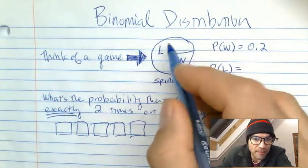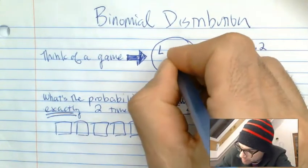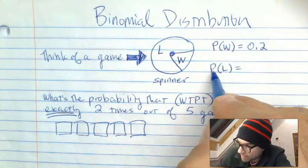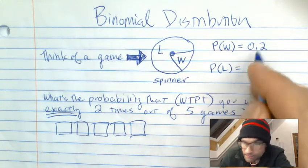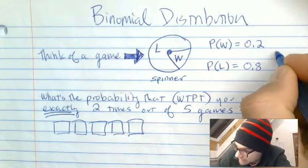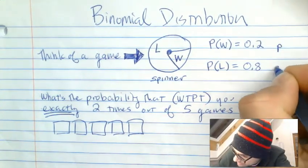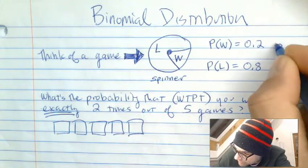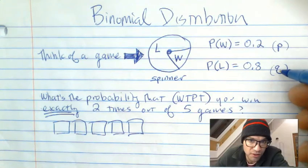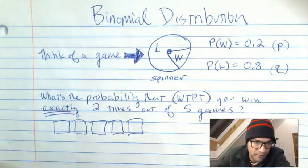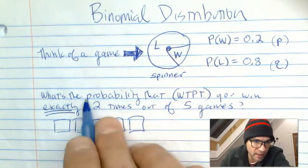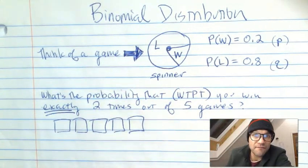Consider a game. Imagine this is a spinner. We spin it and the probability of winning is 0.2, therefore the probability of losing would be 0.8. In stats, you'll see this written as P and Q — P for success and Q for non-success. We want to find: if I play this game, what's the likelihood that I win exactly two times out of five games?